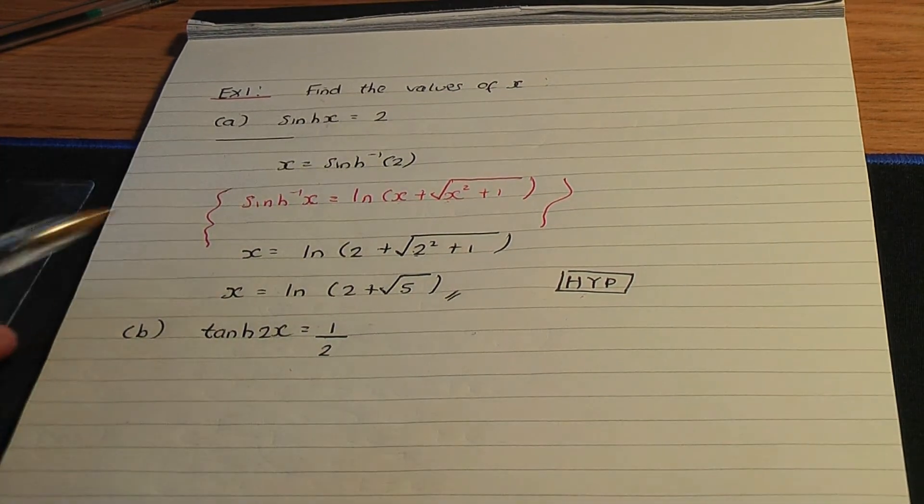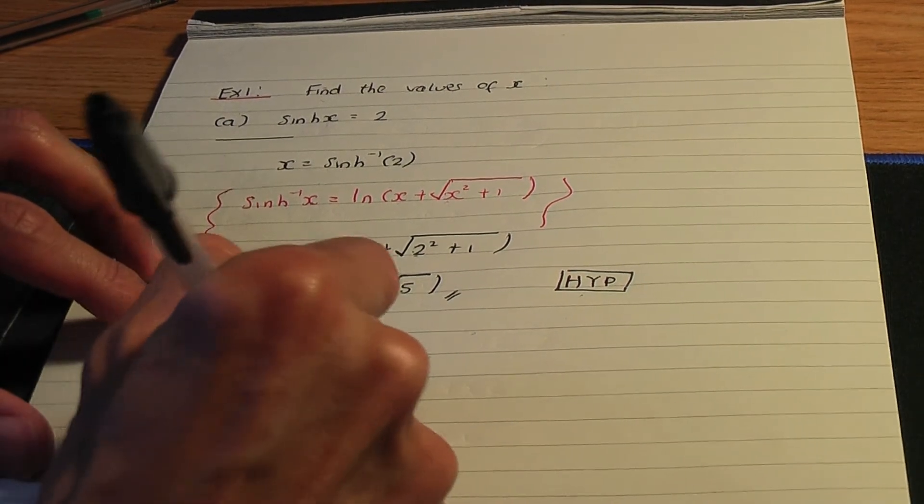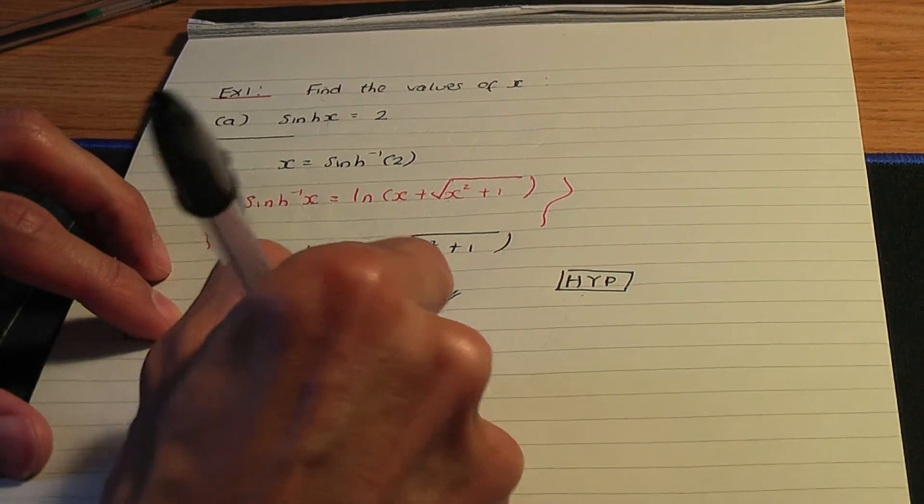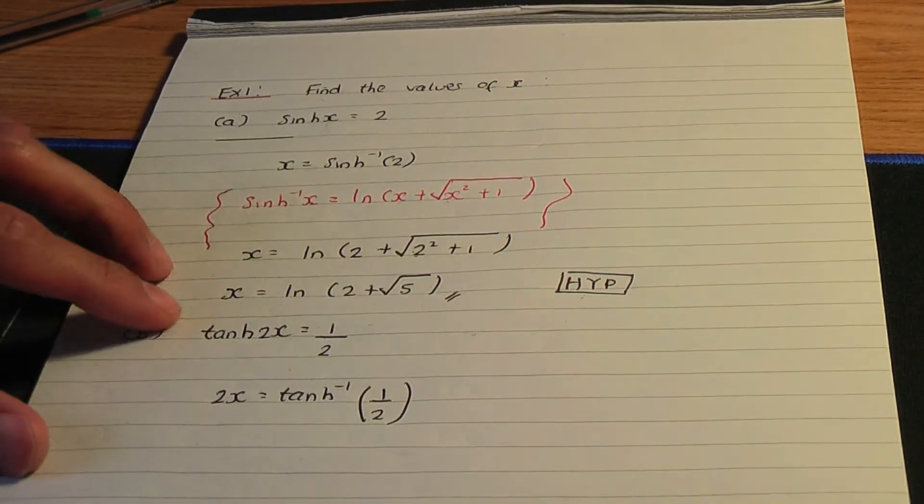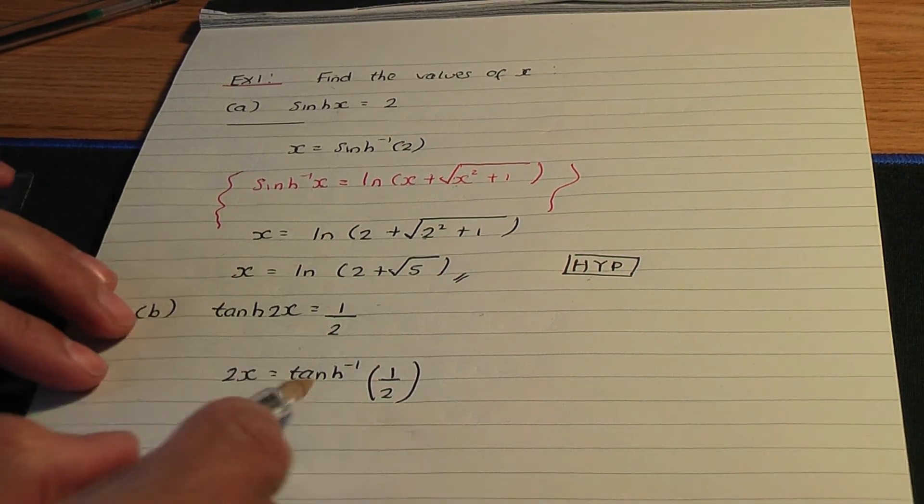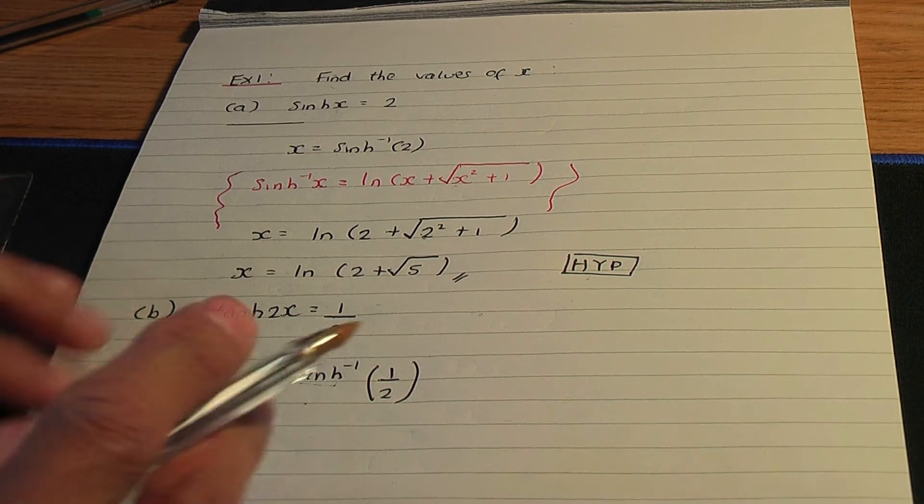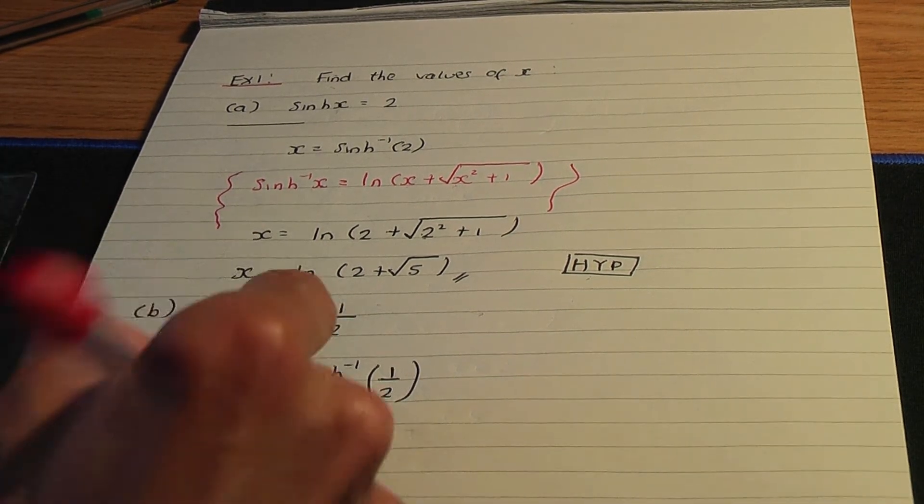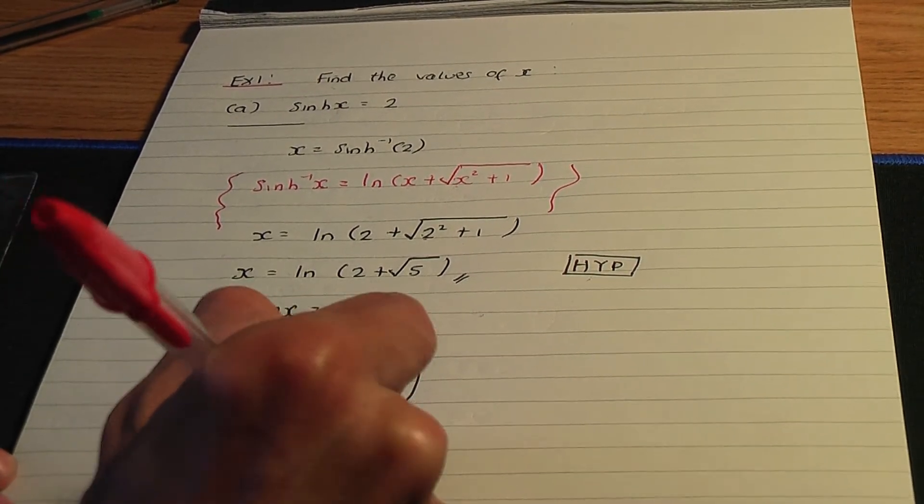Following the same method, if I take the inverses on both sides, 2x will be the inverse hyperbolic tan of 1 over 2. And remember, there is a result for the inverse hyperbolic tan. One of the videos, I did prove that result. Let me remind you.